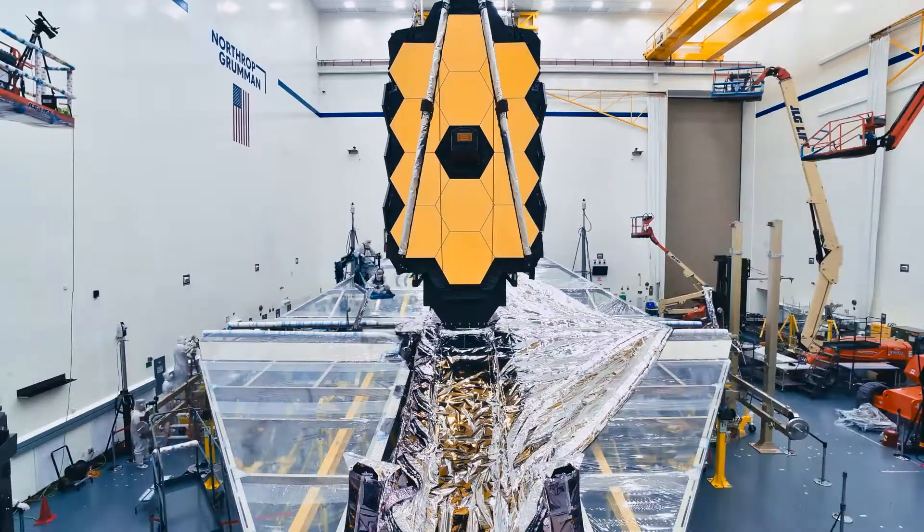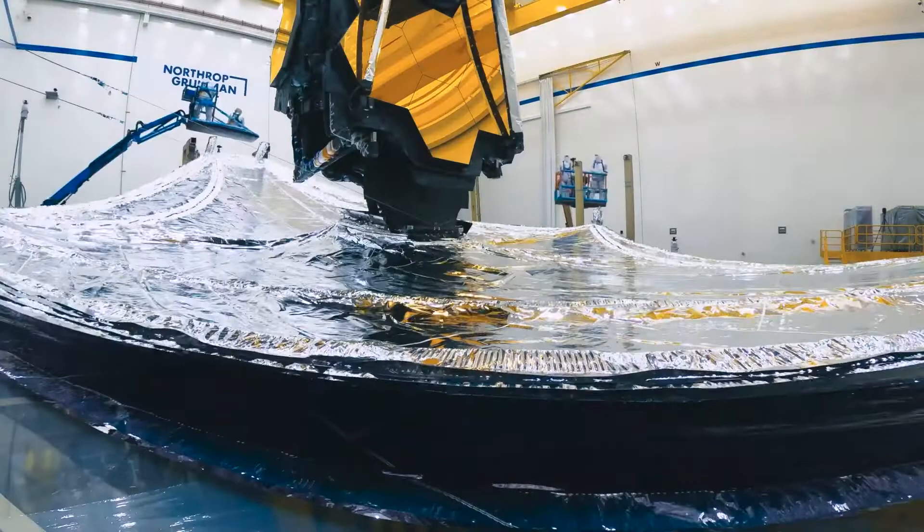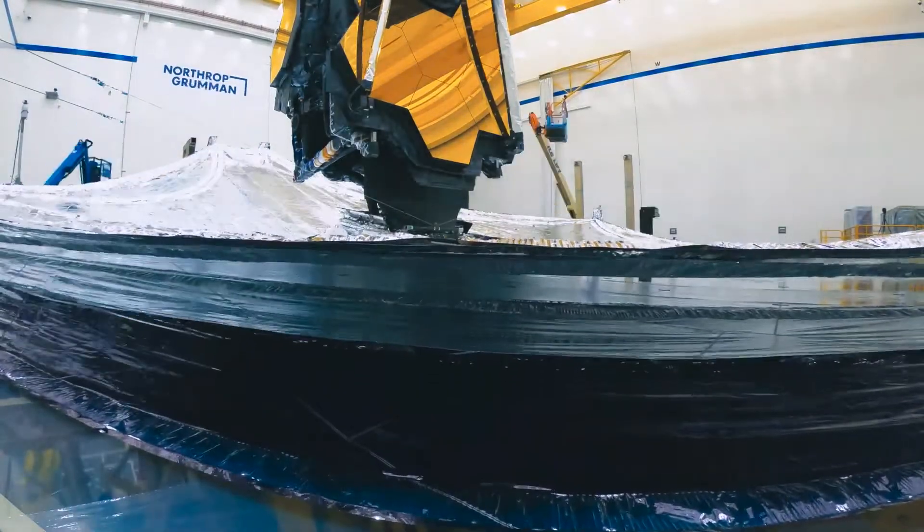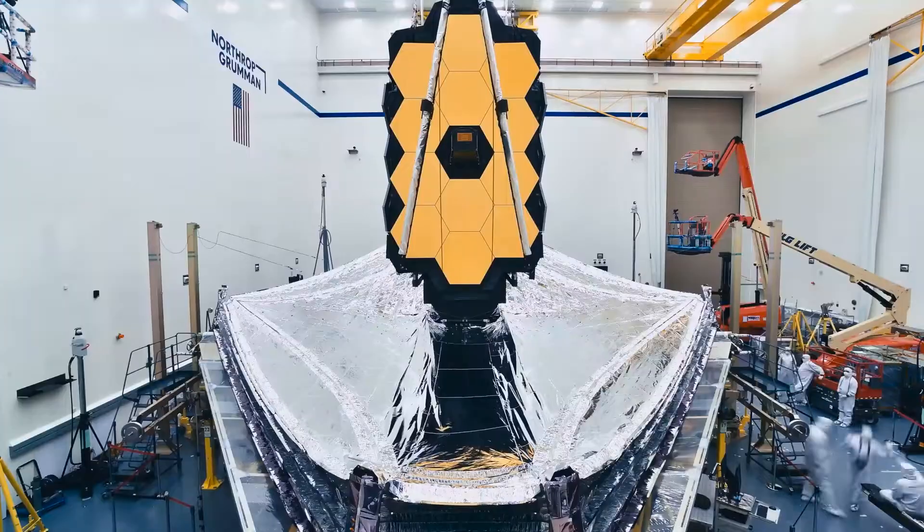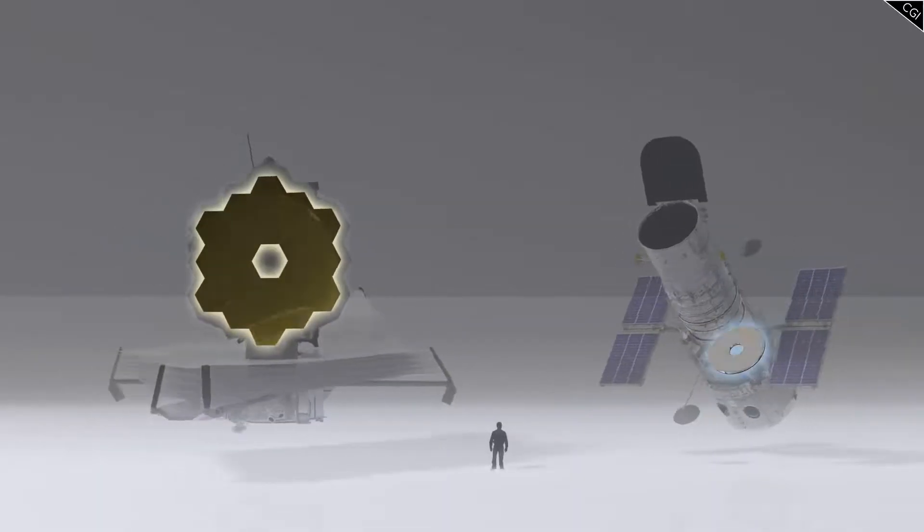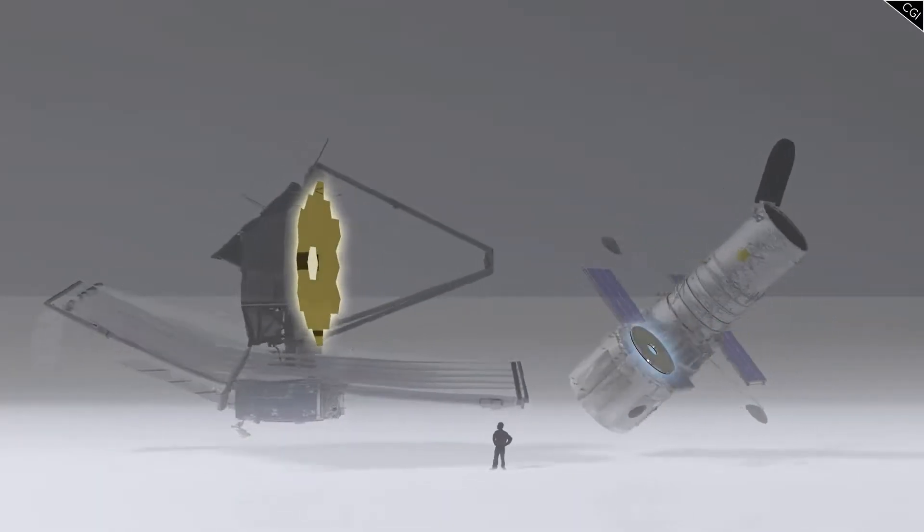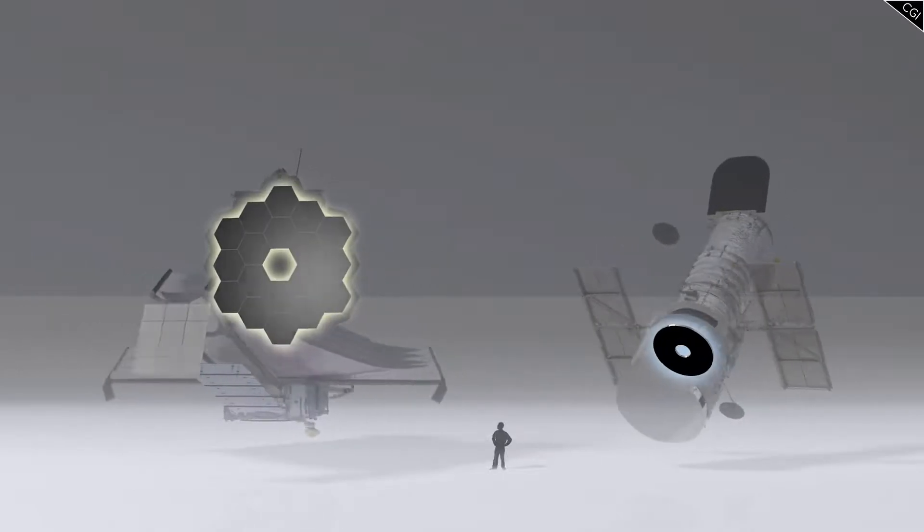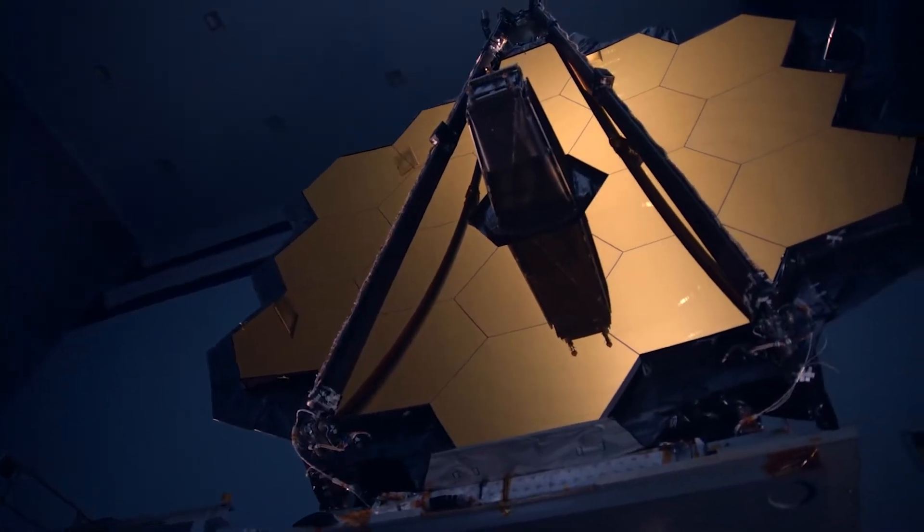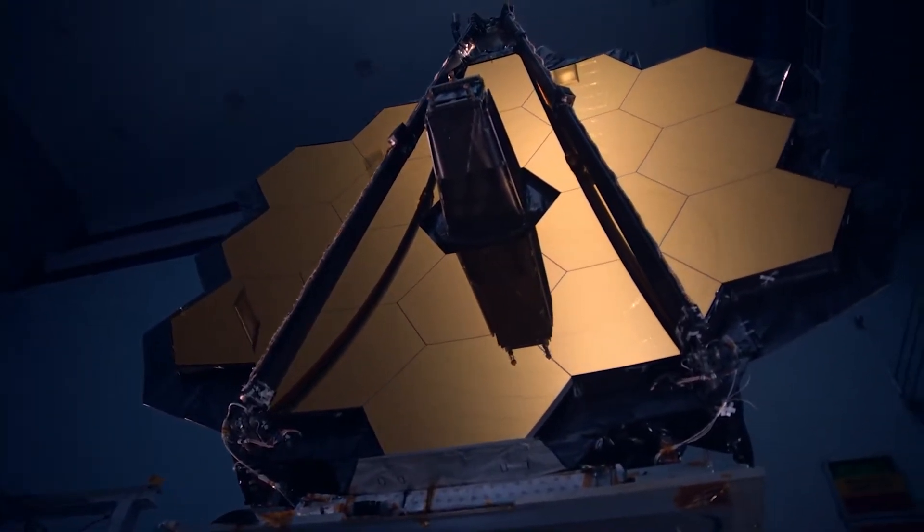It is a 6,500kg monster, with a sunshield whose 14x21m dimensions are around the size of a tennis court. Its mirror for capturing light is six times larger by area than Hubble's lens, which allows it to pick up more photons from further away to create crisp images.